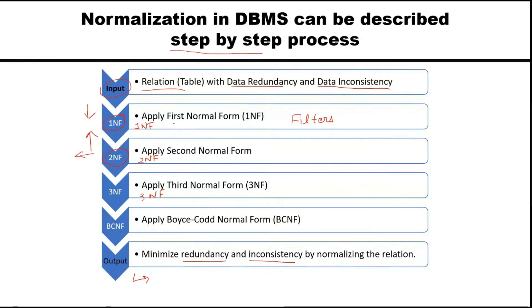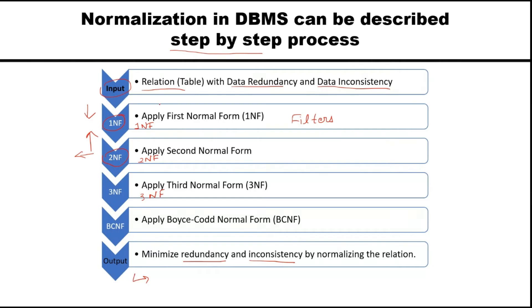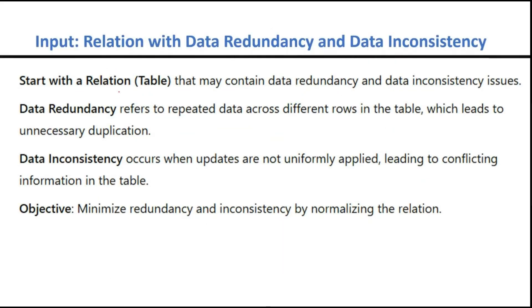We come now to the First Normal Form. Because normalization is a process, even before going into 1NF, let's see what the input step is. The input step says that you start with a relation — a table — that may contain data redundancy and data inconsistency issues. Then you try to minimize all these things. We have understood redundancy and inconsistency, so now we can go straight to the First Normal Form.